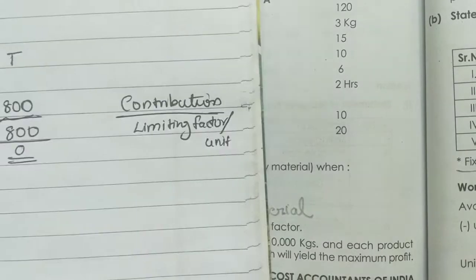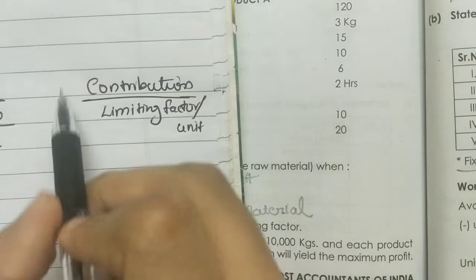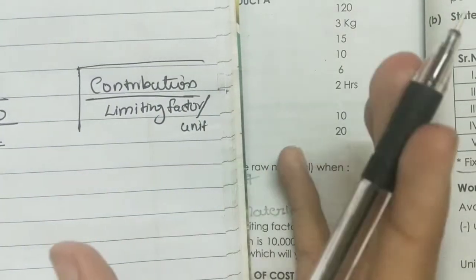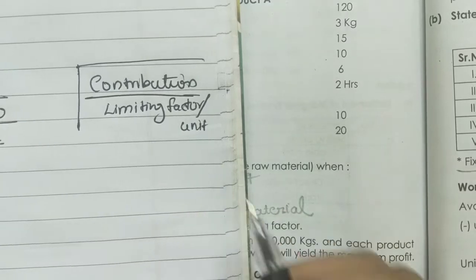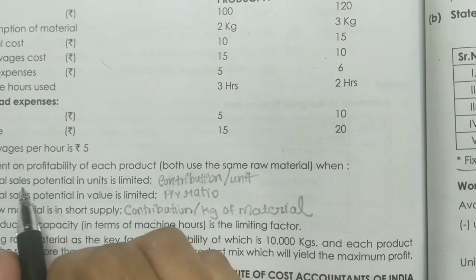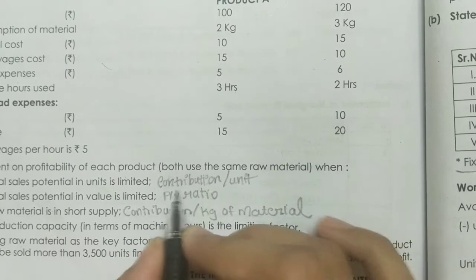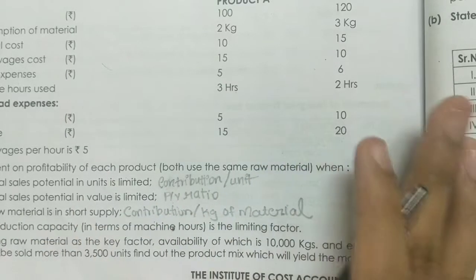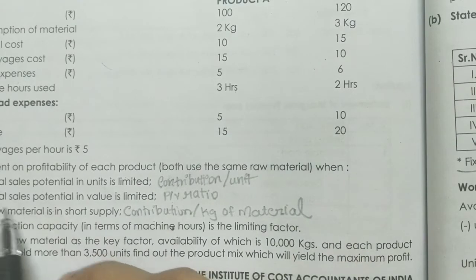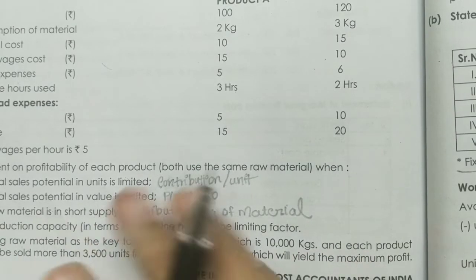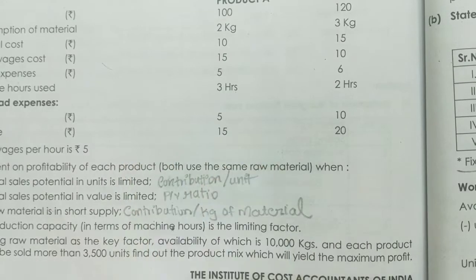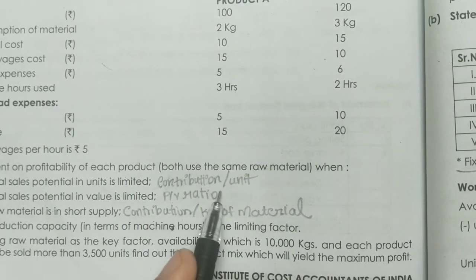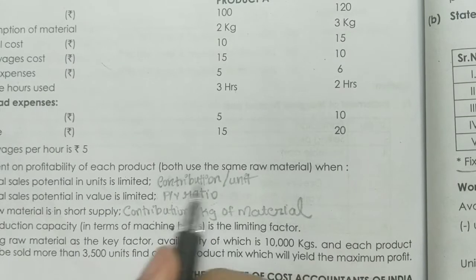What is the limiting factor? Contribution divided by the limiting factor per unit gives the answer. If the limit is in units, we use contribution divided by units. If the total sales potential is in value, then we use contribution divided by the value limit.